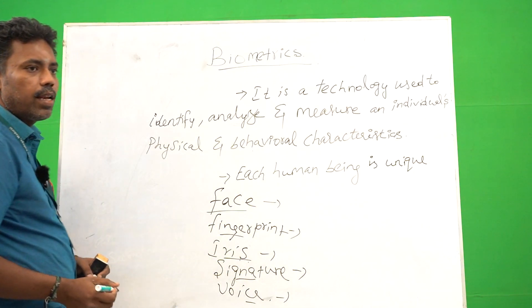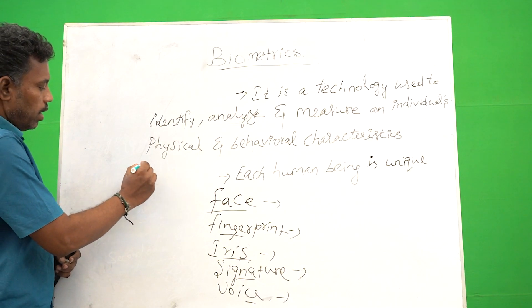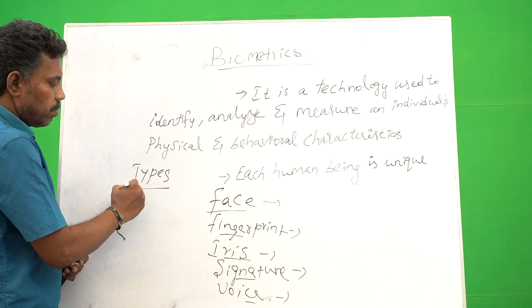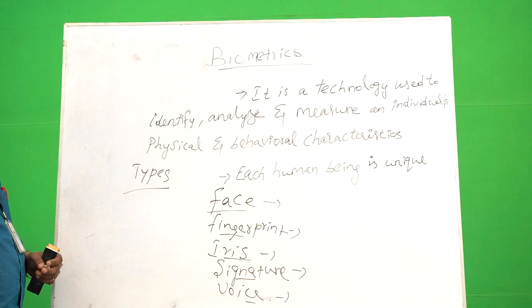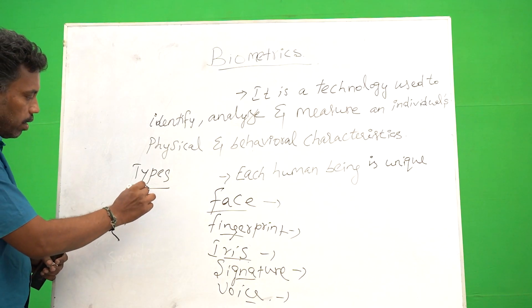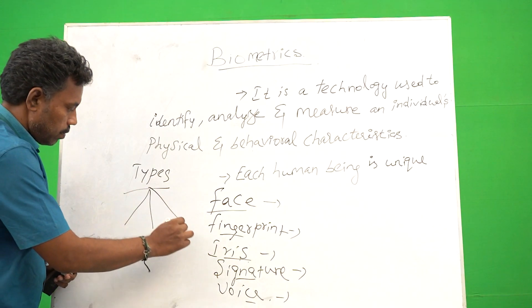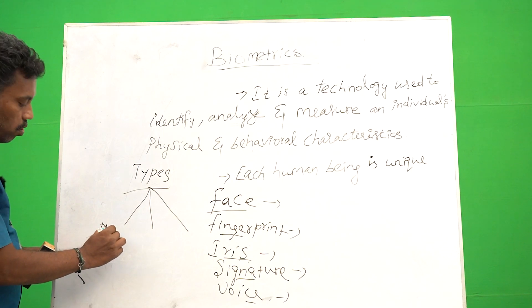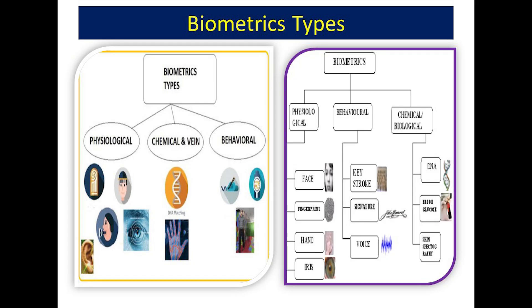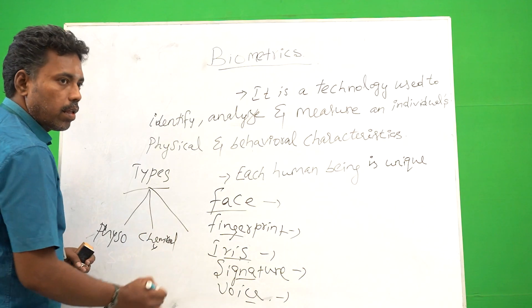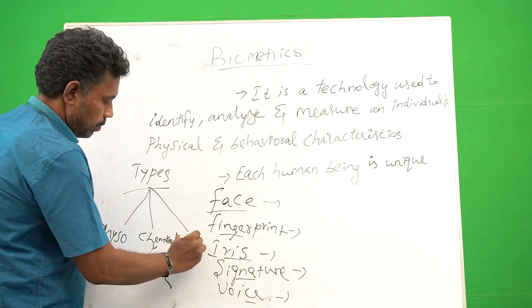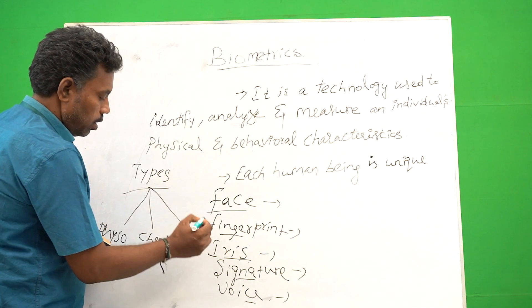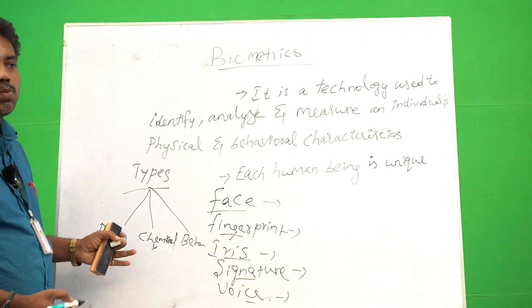Each and everything in biometrics is called biometric types. Each may be divided into three things: that is physical, then chemical, and then behavioral. These three things are what we are going to discuss.